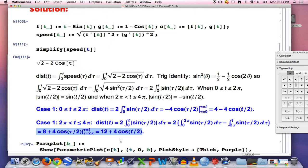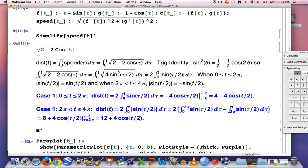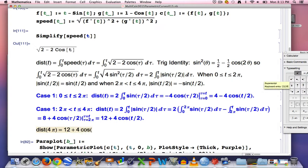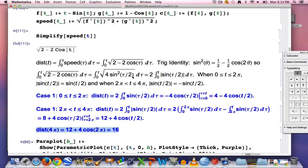And that's the answer as far as dist(t). Combine these two cases into a piecewise function, we can also now find dist(4π). Again, I want text mode here. Dist(4π), the total distance traveled will be 12 plus 4cos(2π). Cos(2π) is 1, so you get 12 plus 4, you get 16 here. That's the total distance traveled as t goes from 0 to 4π. All right.